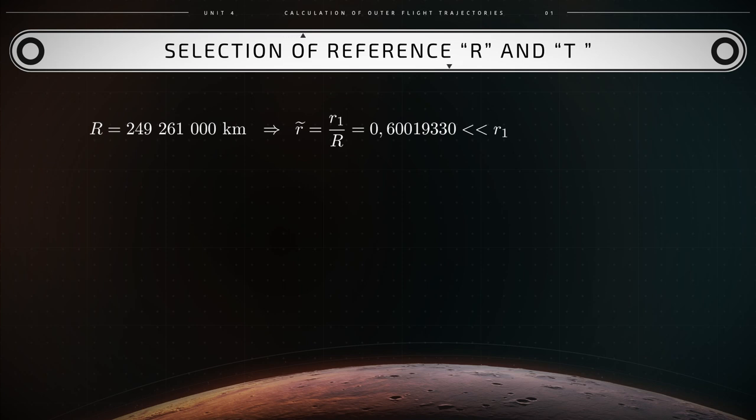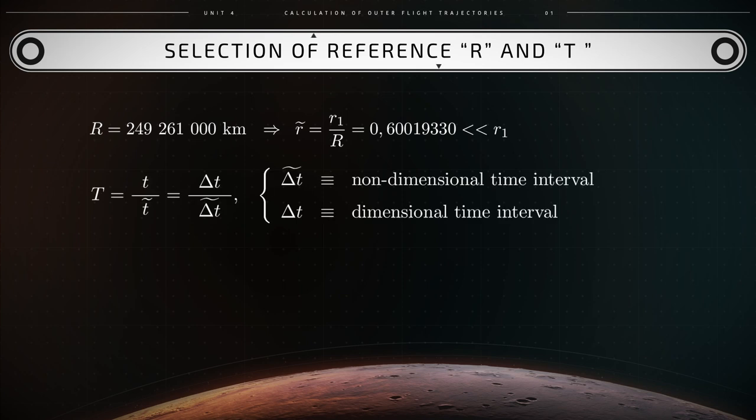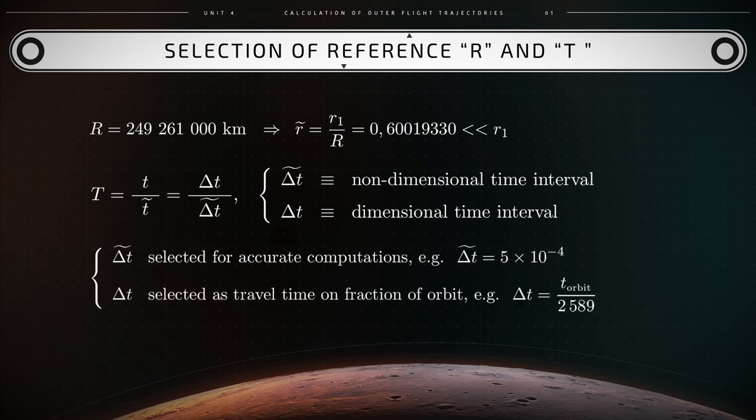Next, consider the reference time capital T. This is expressed as the ratio of two times. capital T equals T dimensional over T tilde, which is also equal to the ratio delta T dimensional over delta T tilde. The non-dimensional time delta T tilde is the time interval that is used in computations. Therefore, it is set to a very small number, for instance, delta T tilde equals 0.0005. That is chosen to obtain accurate computational results.